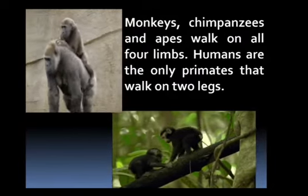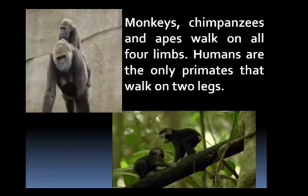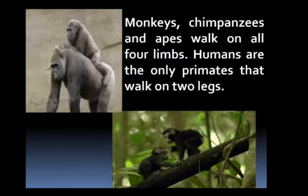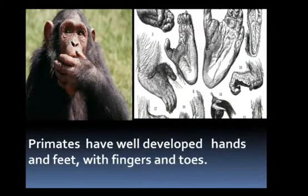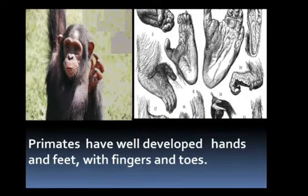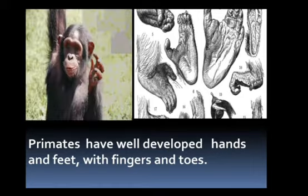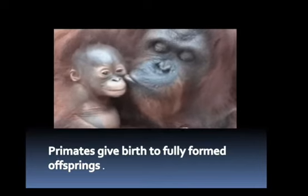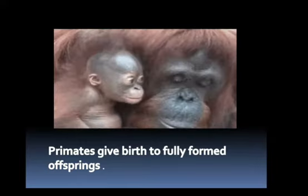Monkeys, chimpanzees, and apes walk on all four limbs, whereas humans are the only primates that walk on two legs. Primates have well-developed hands and feet with fingers and toes. Primates give birth to fully formed offspring after a long gestation period in the mother's womb.